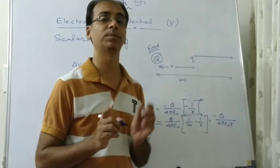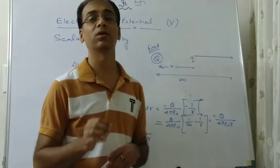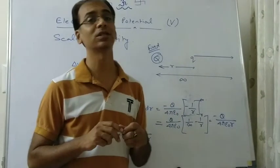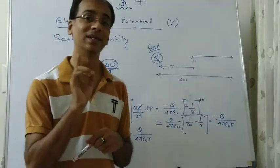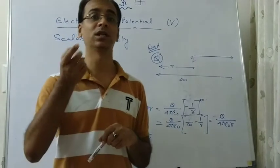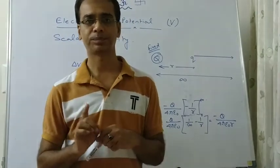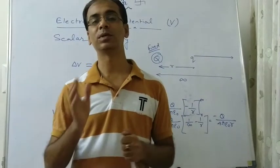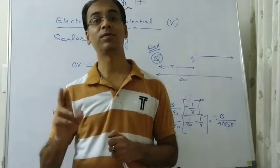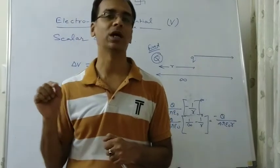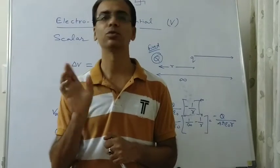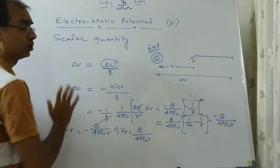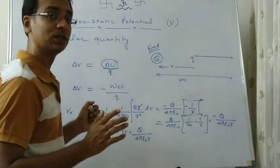Potential energy is a property of the system because it is defined as 1 by 4 pi epsilon naught times q1 q2 by r. Potential energy is defined for a system. Whereas potential is a property of a single charge — that is why it is defined as potential energy per unit charge. The same kind of relation exists between force and electric field: force is a property of two charges, field is force per unit charge, a property of one charge.